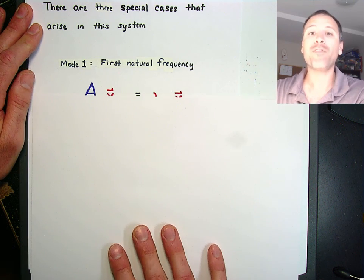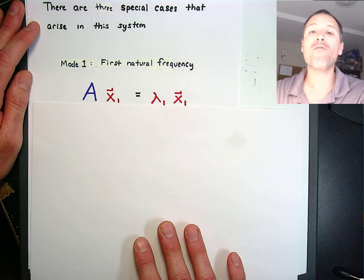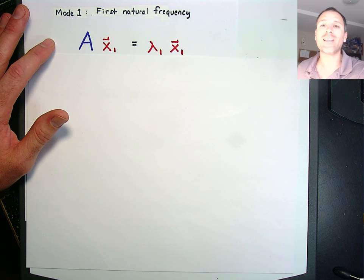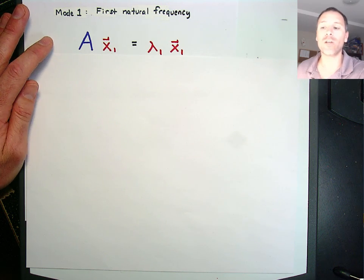When we're trying to figure out the behavior of our system, we're going to focus on two very special cases that show up as those masses move. The first special case is going to be known as mode 1 of our system, and that corresponds to something called the first natural frequency.